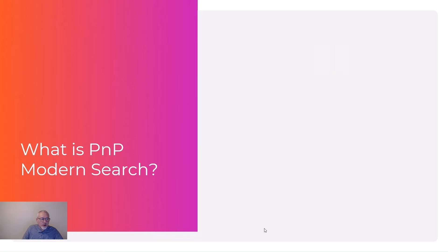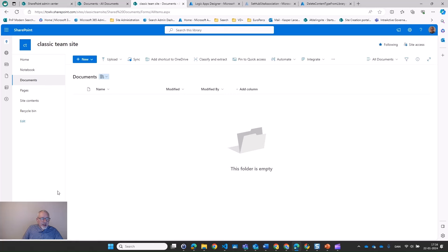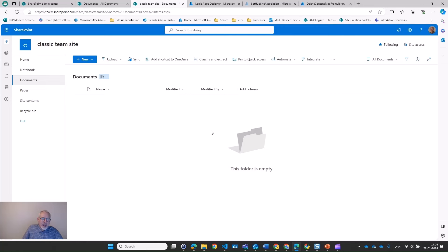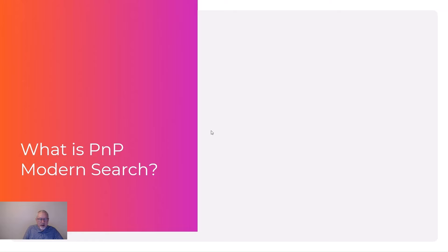So what is PnP Modern Search? About 10 years ago Microsoft decided they would like to change what was, back in the old days, something that looked like this, and update the graphic interface to something more modern. In the process they kind of lost the search web parts, because in classic sites we had web parts for creating new search solutions: a search box, search vertical, search refiner, and the search result web part, which we could customize to fit our purposes.